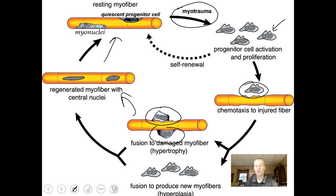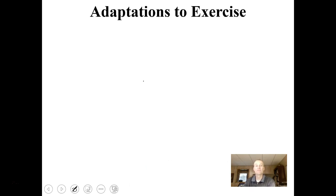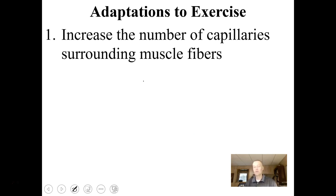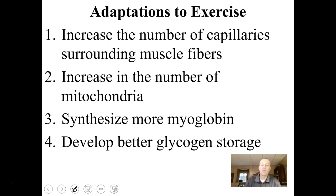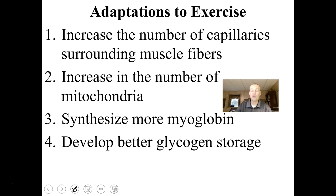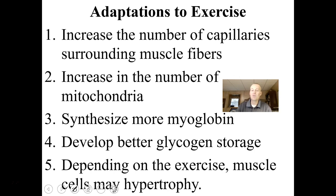Satellite cells will fuse with the muscle cell and repair it, returning it to a resting muscle fiber. Muscle fibers don't undergo cell division, so they must repair themselves — if a muscle cell dies, no new muscle cells grow, but existing cells can grow in size. With prolonged exercise you can increase capillaries surrounding muscle fibers, increase the number of mitochondria to make more ATP, make more myoglobin to store more oxygen, and develop better glycogen storage. With weight-lifting type exercises muscles can hypertrophy — grow in size.